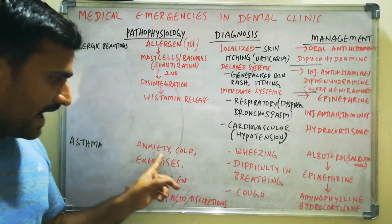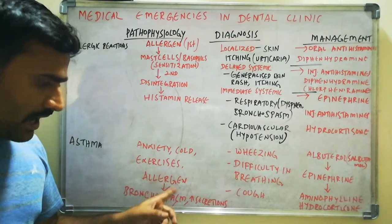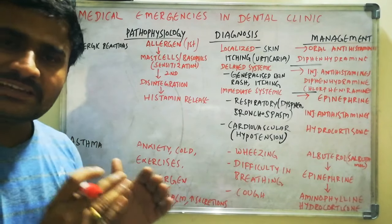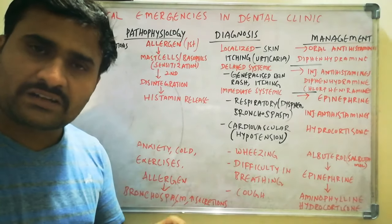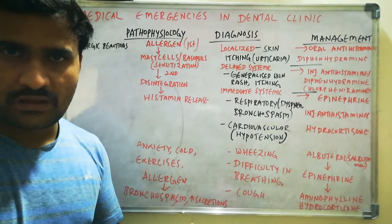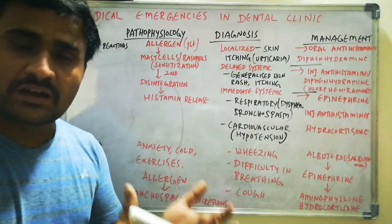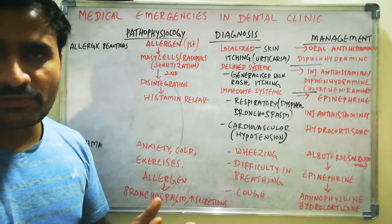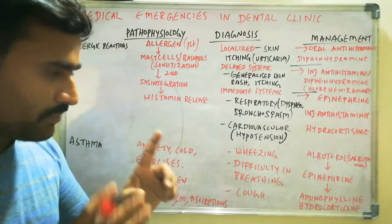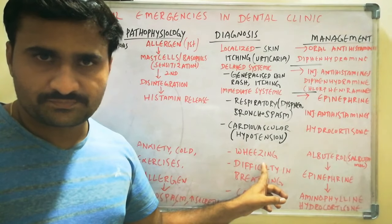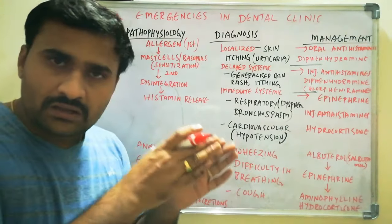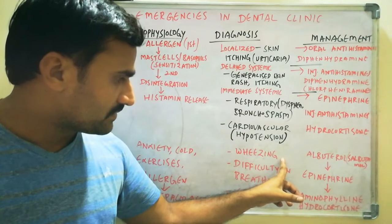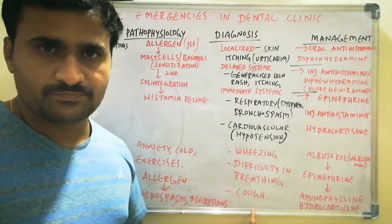Coming to asthma — anxiety, cold, exercise, or allergens lead to bronchospasm and increased mucus secretions. Asthma is generalized contraction of smooth muscles in the bronchi or bronchioles, leading to difficulty in breathing along with increased thick mucus secretions. The prominent feature is wheezing during inspiration or expiration, with difficulty in breathing and cough.